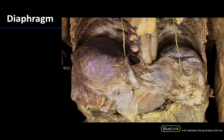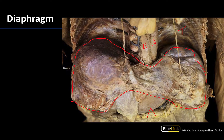This large double dome-shaped structure is going to be the diaphragm, and this is going to separate the thoracic cavity from the abdominal cavity. The thoracic cavity is going to be more superior, abdominal will be more inferior. What has been removed in this dissection is the heart and the lungs. You can see the esophagus right here, the thoracic aorta, and the vertebral column in this region — these would all be in this more superior portion.